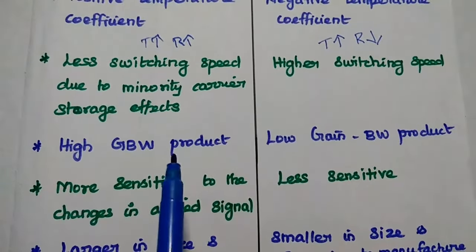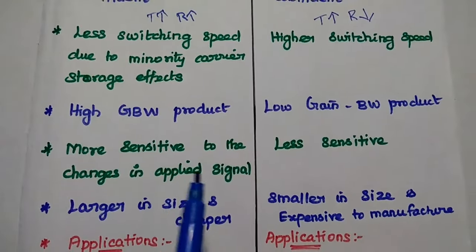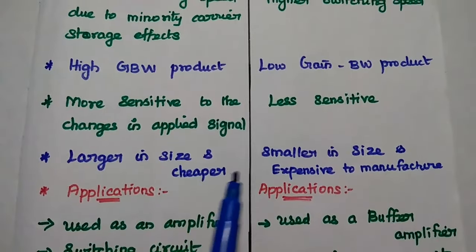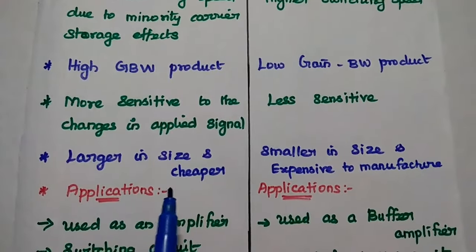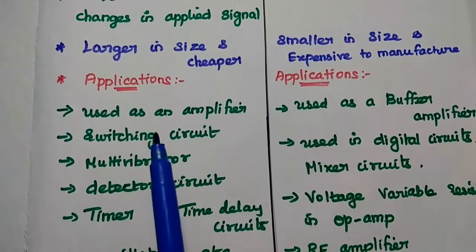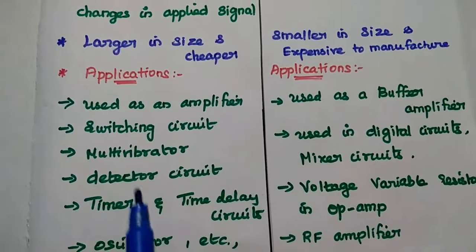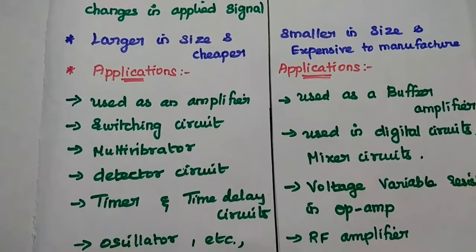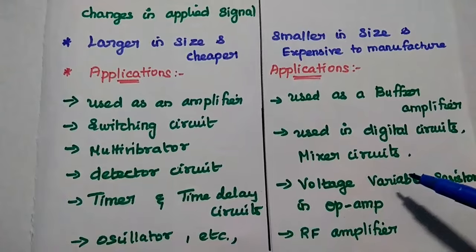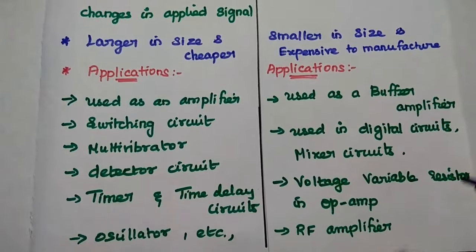BJT has a high gain bandwidth product, while FET has a low gain bandwidth product. BJT is more sensitive to changes in the applied signal, but FET is less sensitive. BJT is larger in size and cheaper to manufacture, but FET is smaller in size than BJT and expensive to manufacture. BJT is widely used in low current applications such as amplifiers, switching circuits, multivibrators, detector circuits, demodulator circuits, timer and time delay circuits, and oscillators. FET is used as a buffer amplifier, in digital circuits, mixer circuits, RF amplifiers, and voltage variable resistors in op-amps. FET is widely used in high current applications.